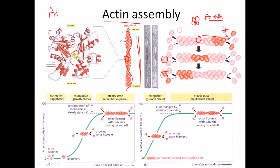The direction in which the actin fiber elongates is called the positive direction — this has nothing to do with any charge, but we call it that because in this direction the actin fiber is being made. New actin comes in and attaches at this end, which is why it is called the plus end or positive end. At the opposite end, it is called the negative end, where actin dimers are dissociating.